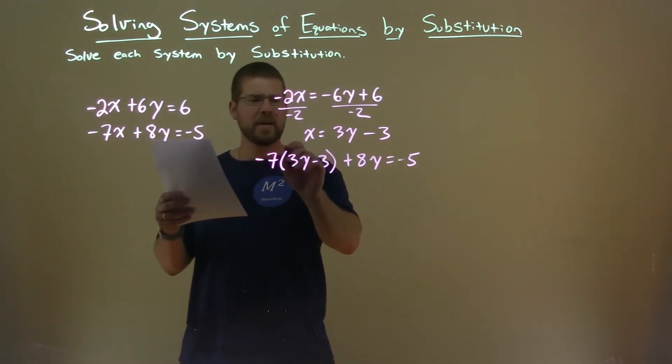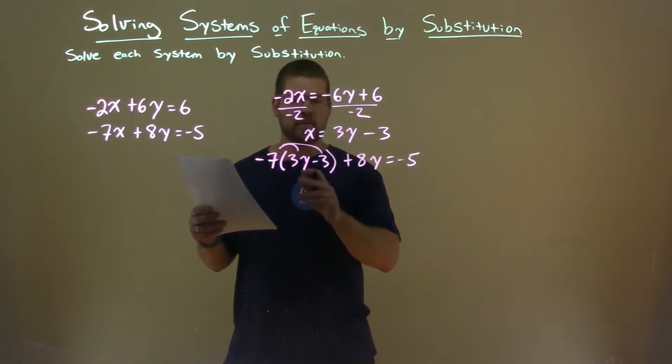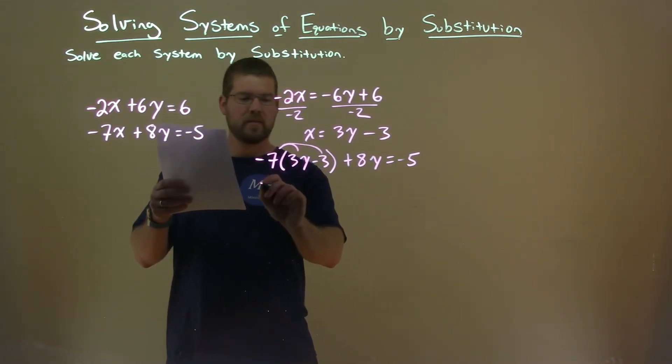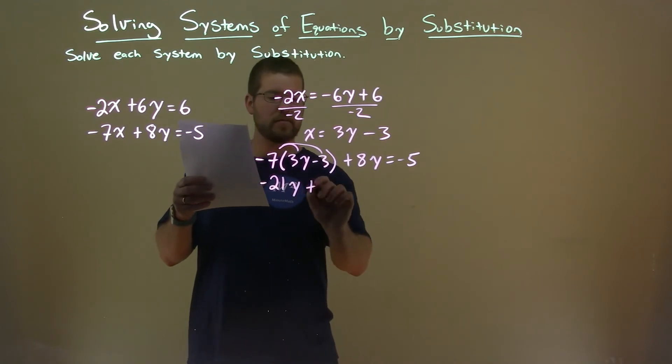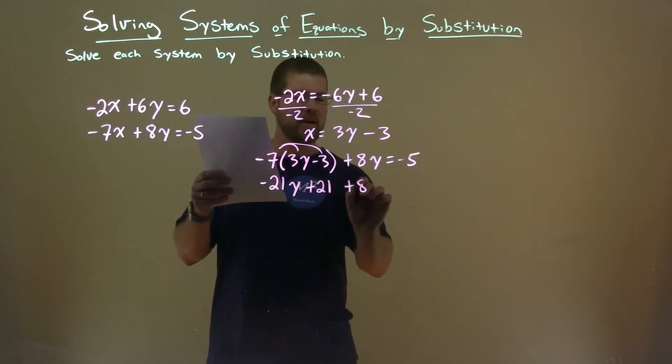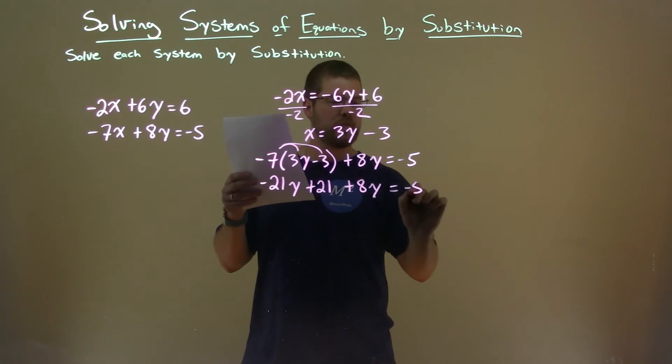To do that, I'm distributing the minus 7 to both parts. Negative 7 times 3y is minus 21y. Negative 7 times negative 3 is positive 21. We have an 8y here and a negative 5.